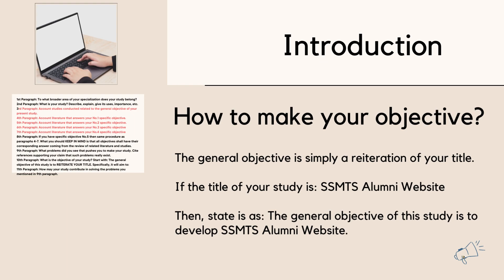The general objective is simply a reiteration of your title. For example, if the title of your study is 'SSMTS Alumni Website,' then the general objective would be stated as: the general objective of this study is to develop the SSMTS alumni website.